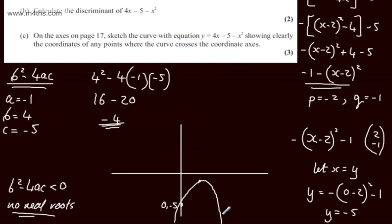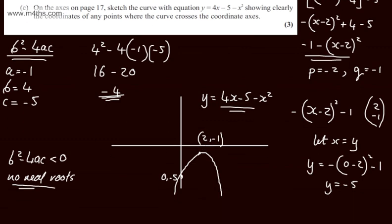We're not asked for the maximum point. I'm going to write it on anyway, and that's 2 comma minus 1. This is what we need, and we can state now that y is equal to 4x minus 5 minus x squared. So 3 marks in total for the graph, and as stated, you don't need to put on the maximum point.